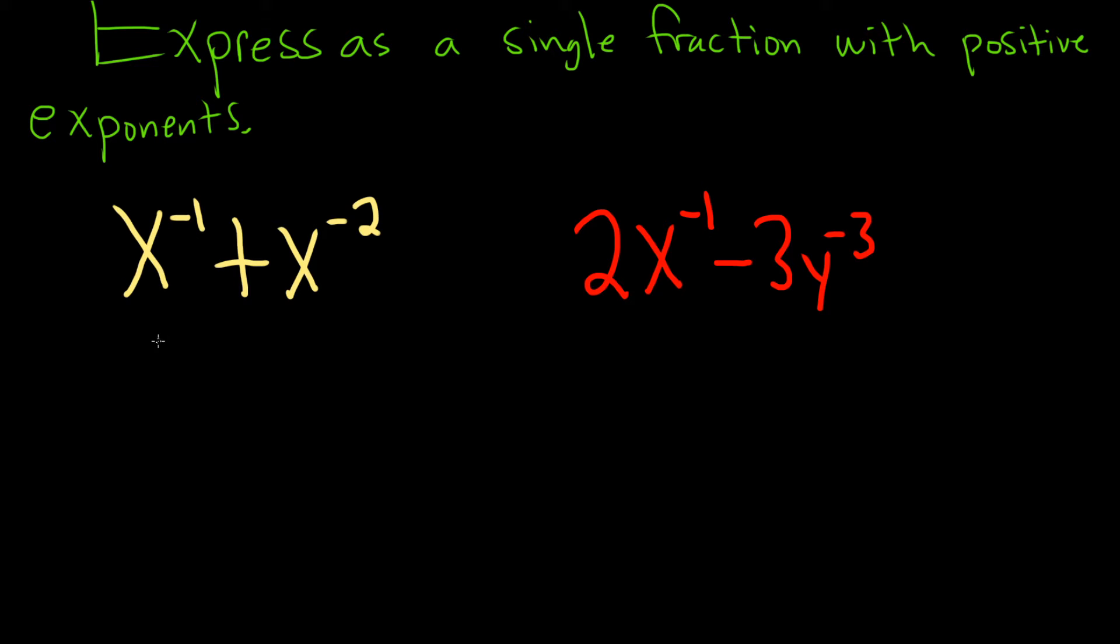So if you have x to the negative 1, you can write that as 1 over x to the 1, or just x. It's really an x to the 1 here, but I'm not going to write the 1. Plus, likewise, you could bring this downstairs, and it becomes 1 over x squared.